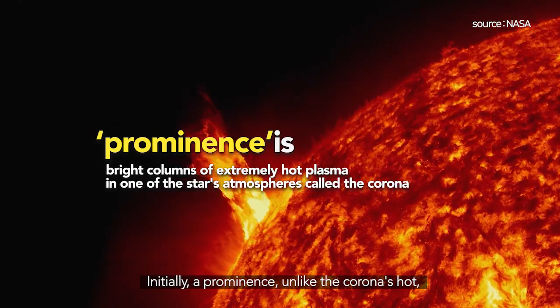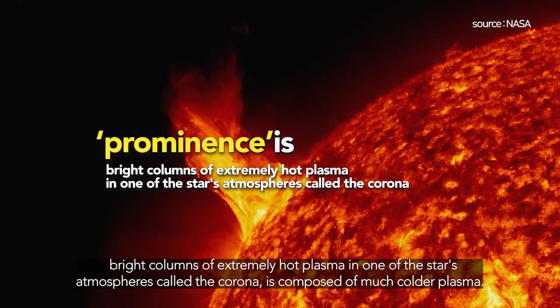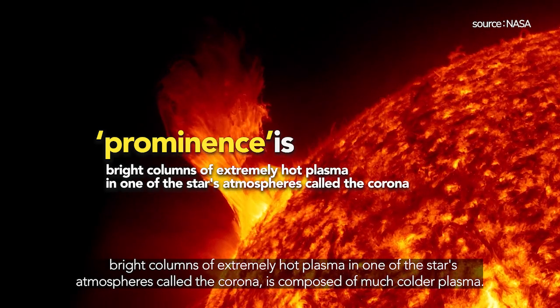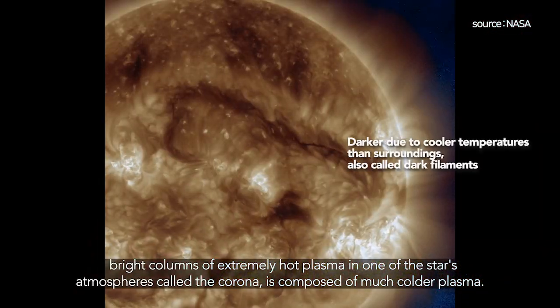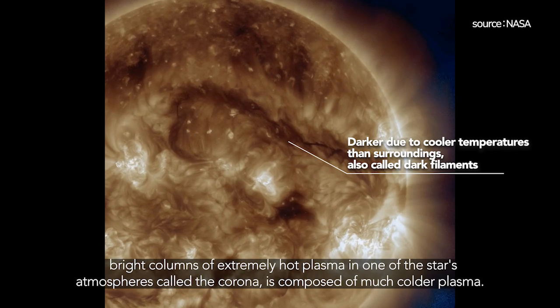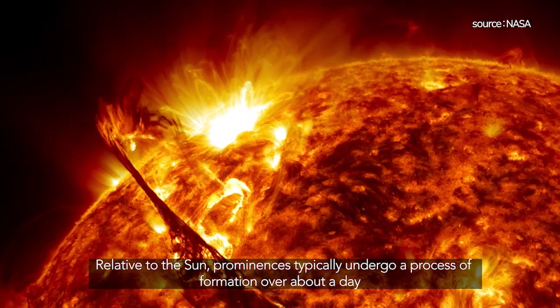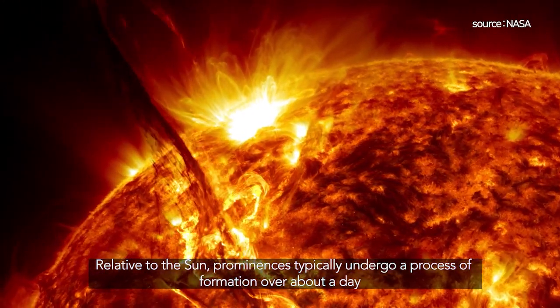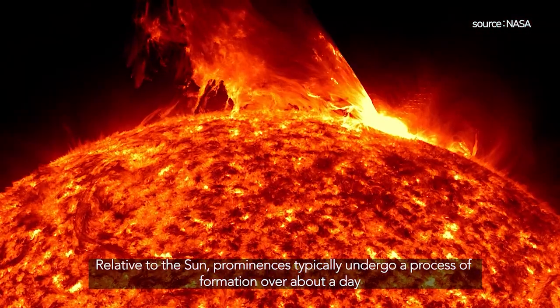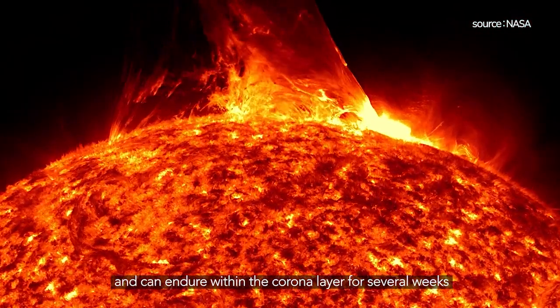A prominence, unlike the corona's bright columns of extremely hot plasma, is composed of much colder plasma. Relative to the sun, prominences typically undergo a process of formation over about a day and can endure within the corona layer for several weeks.